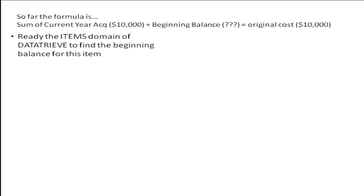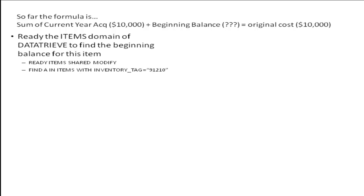You want to read the item's domain data tree to find the beginning balance for this item. You may do so by doing ready items shared modify, find a collection in items with inventory tag equal to that inventory number, and list all beginning info.